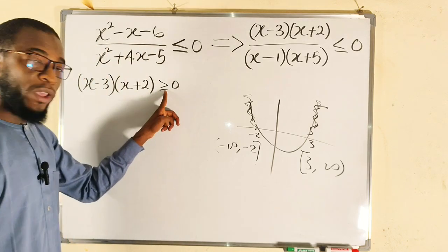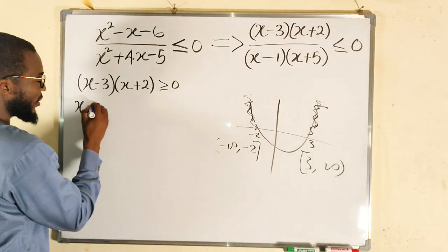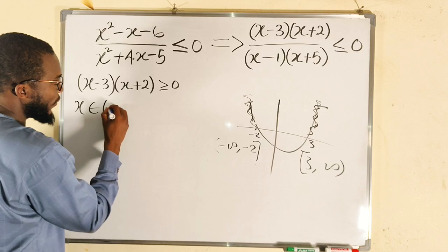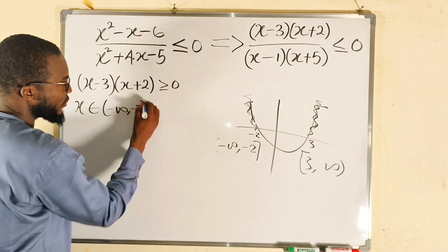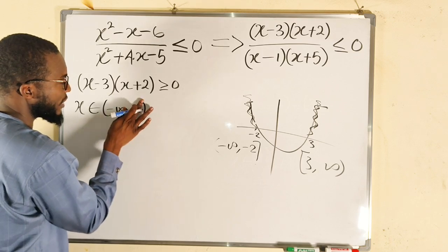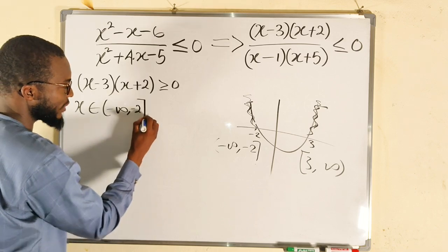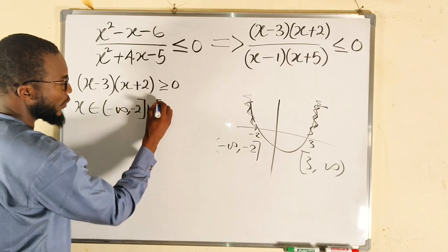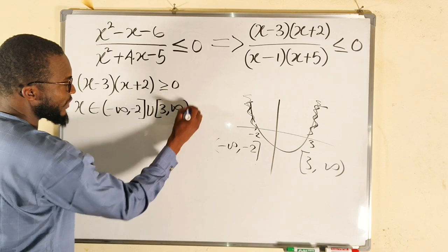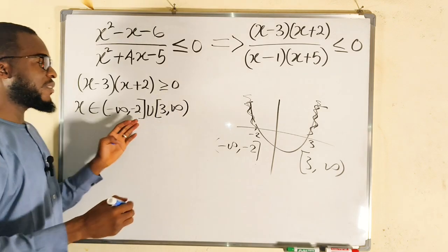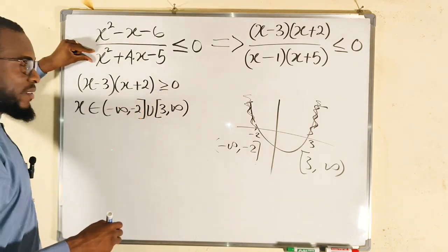Negative 2 and positive 3 will be included because of the 'equal to.' So x belongs to the set of values from negative infinity to negative 2 (square bracket, included) union from 3 to positive infinity. This is the solution when the numerator is positive.